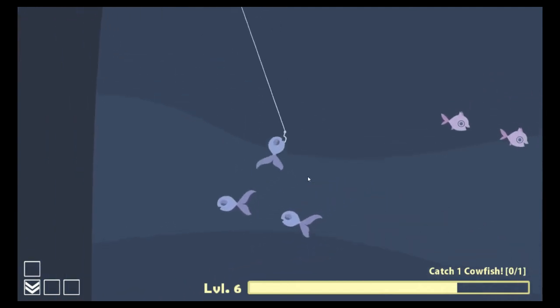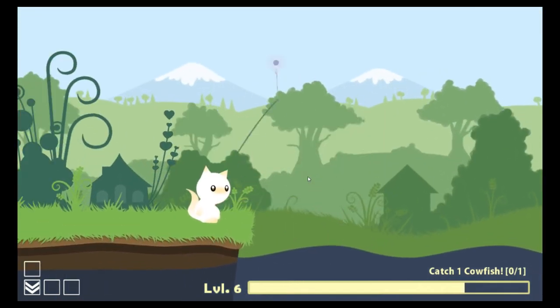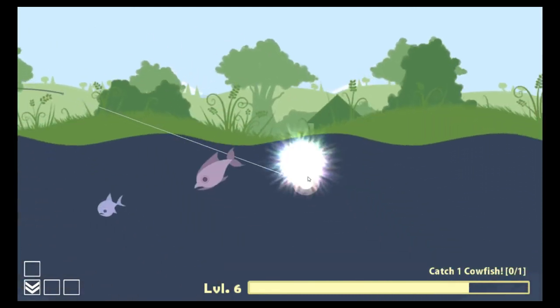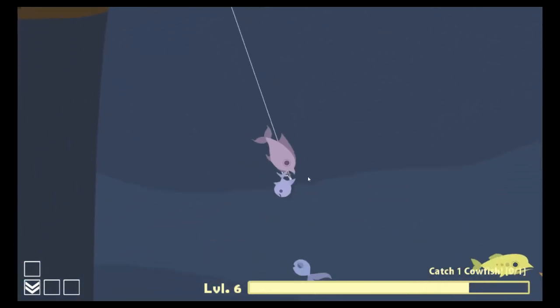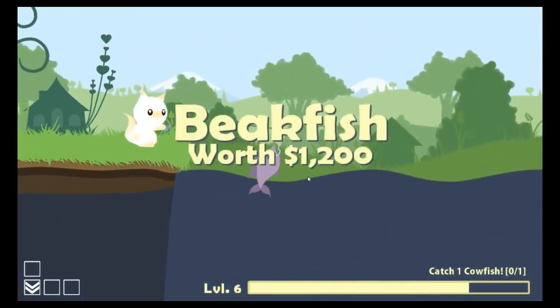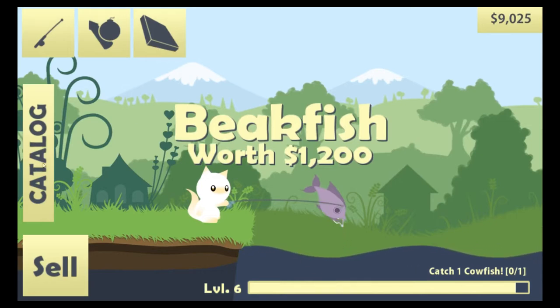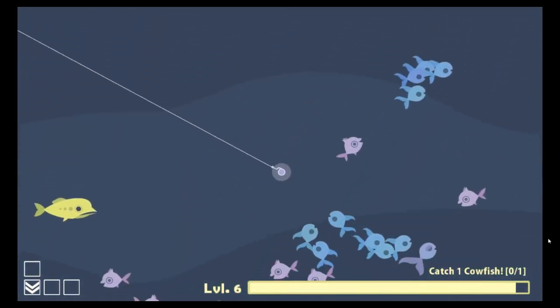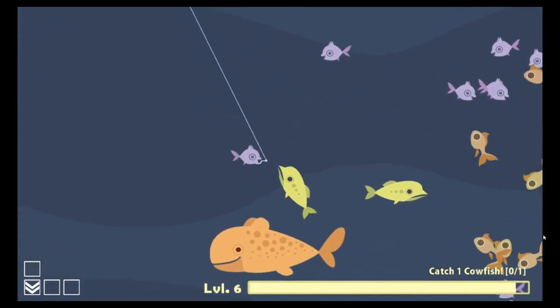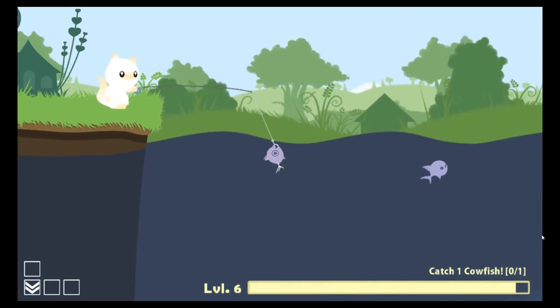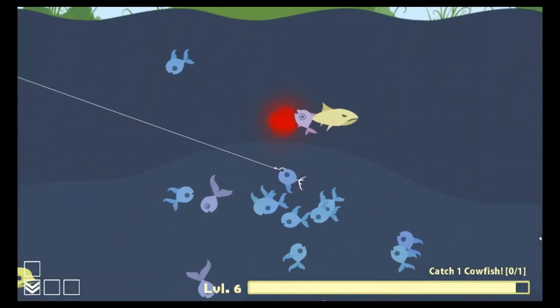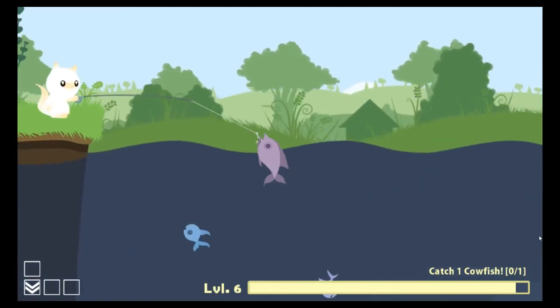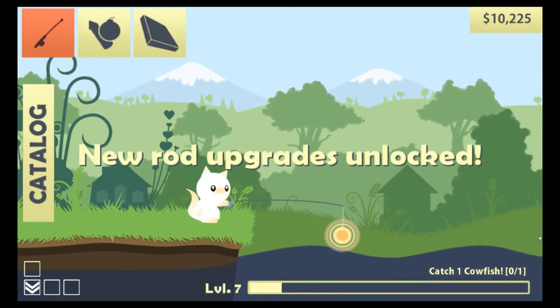Alrighty. These are 400 bucks for a smell of a fish. I'm gonna catch one. Alright, guys. I might not be able to finish this cowfish challenge because I just can't get a cowfish. Oh my goodness. That's a new fish, guys. What is this bad boy? He is a fighter. Beak fish. Okay. I'll sell you. You're worth a pretty penny.